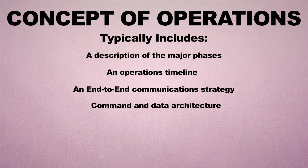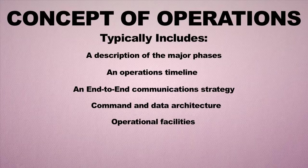A ConOps will provide a command and data architecture showing how data will flow — even on the ground — from an antenna all the way back to a mission control center or science facility where scientists process that data. It will also identify operational facilities required, such as those needed to process a satellite before launch or to support communications, like Mission Control in Houston for the Space Station.